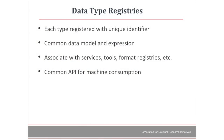What are data type registries? We want each of these types registered and uniquely identified. We want a common data model and expression so you can understand what it means. And we want to associate the data with services, tools, format registries, etc. — a focal point for understanding data types, and a common API for machine consumption. This doesn't mean there will be one registry — there will be many. And it doesn't mean there will be type police. If you're using a type and the rest of the world thinks you're wrong, that's a waste of time. But your type should be in one of these registries so people can find your data and know what you meant.